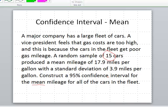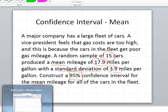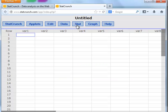The sample information we need: sample size N is 15, sample mean x-bar is 17.9, and sample standard deviation S is 3.9. We do need to make note of the level of confidence here. It was 95%. So we can go ahead and do this in StatCrunch.